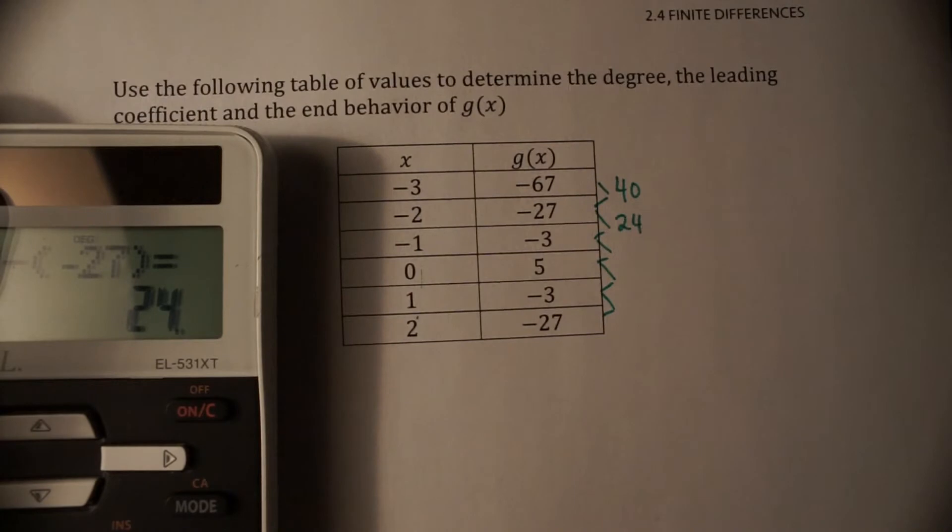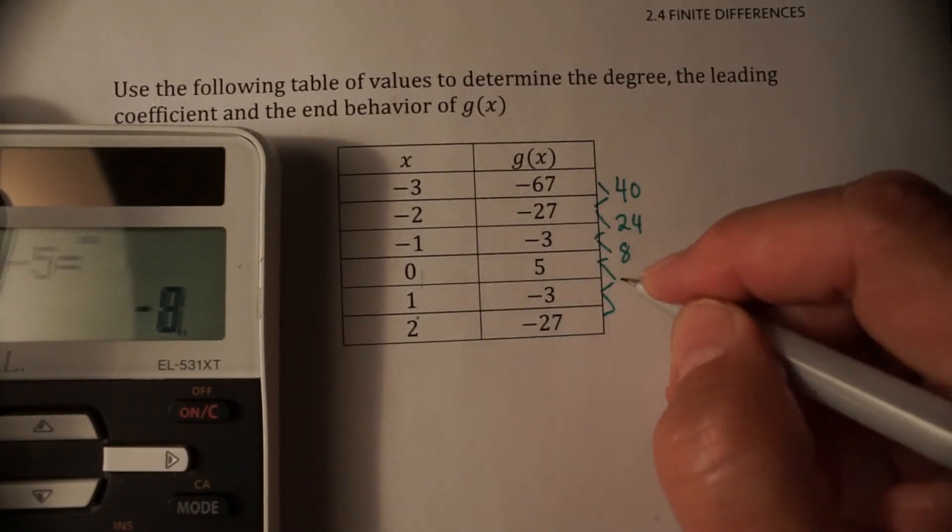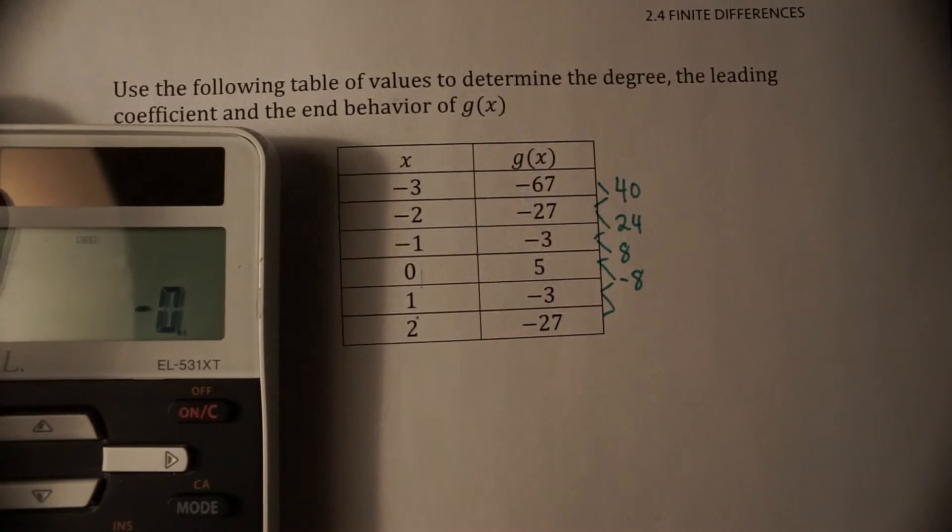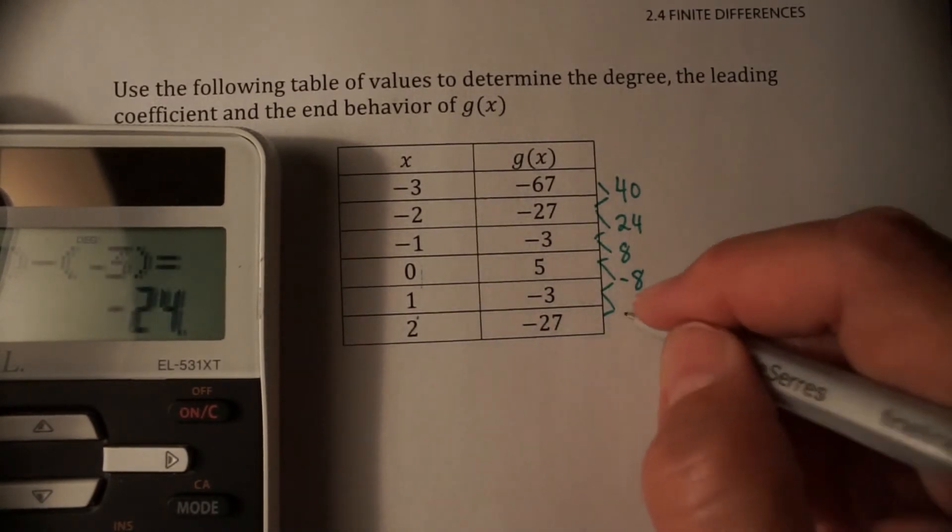And then 5 minus negative 3 is 8. And then negative 3 minus 5 is negative 8. And negative 27 minus negative 3, negative 24.